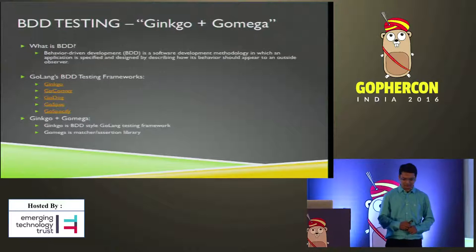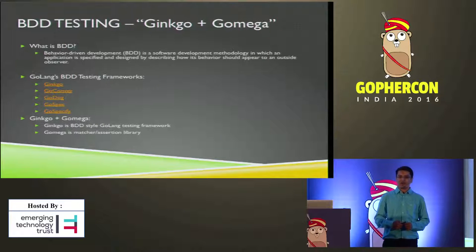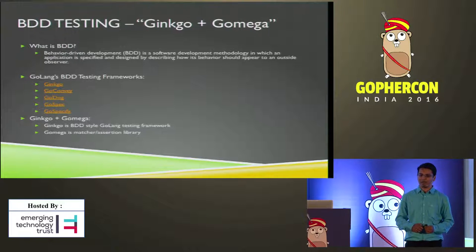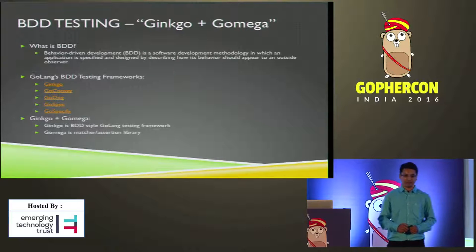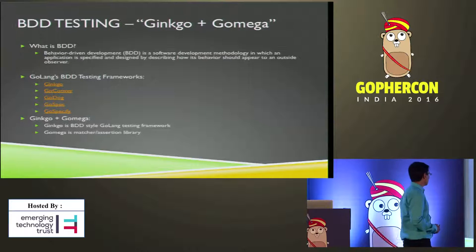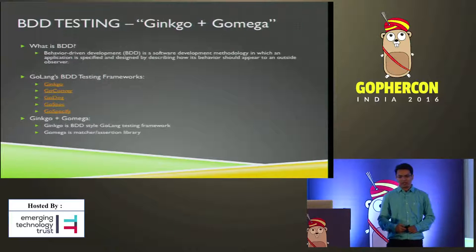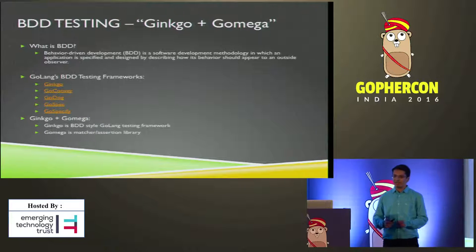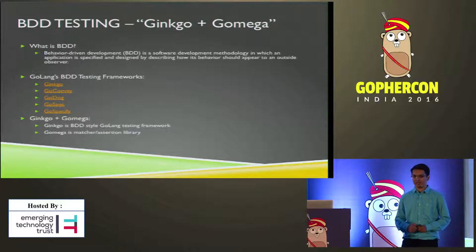Second is BDD testing. BDD stands for behavior-driven development, where development is driven by the behavior of the application. The main consideration for testing or development is the behavior of the application — how it behaves — and that is the acceptance criteria. In Go, we have a bunch of BDD testing frameworks: Ginkgo, GoConvey, GoDog, GoSpec, GoSpecify. I've taken the framework Ginkgo and Gomega. Ginkgo is a BDD testing framework and Gomega complements it by providing matchers and assertions.